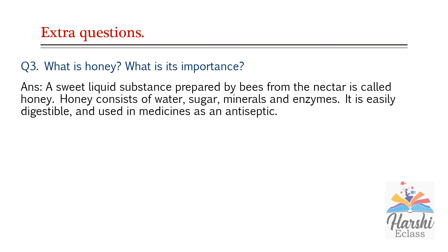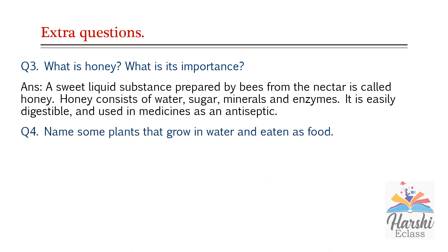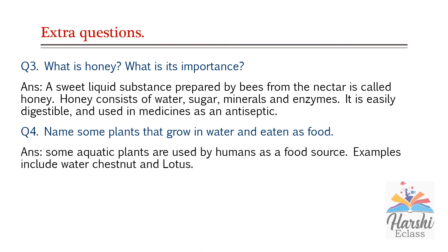Question three: What is honey and what is its importance? A sweet liquid substance prepared by bees from nectar is called honey. Honey consists of water, sugar, minerals, and enzymes. It is easily digestible and used in medicines as an antiseptic — antiseptics prevent the growth of microorganisms. Question four: Name some plants that grow in water and are eaten as food. Examples include water chestnut and lotus.